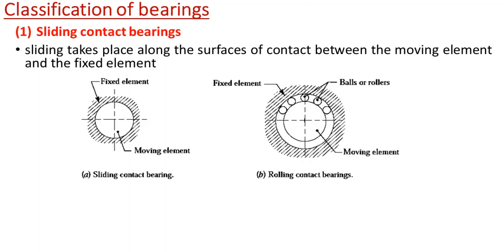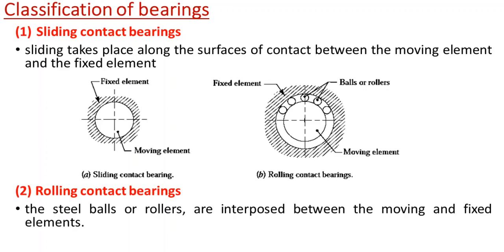In sliding contact bearings, there is a journal which is the moving element and the bearing is the fixed element which supports that moving element. In rolling contact bearings, steel balls or rollers are interposed between the moving and the fixed elements. In sliding contact bearings, lubricant is filled between the journal and the bearing, while in rolling contact bearings, steel balls or rollers are interposed between the moving and fixed elements.